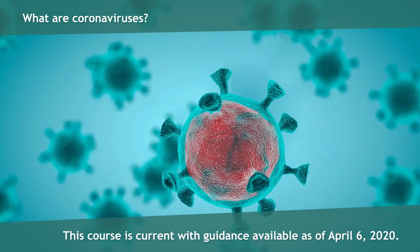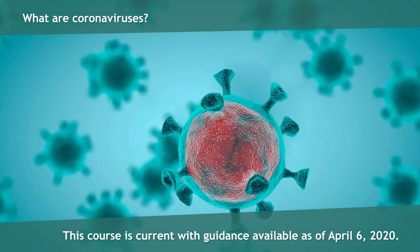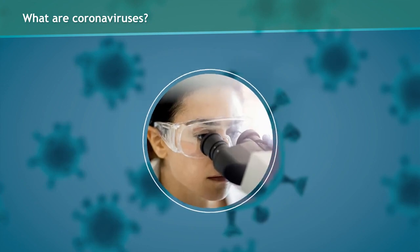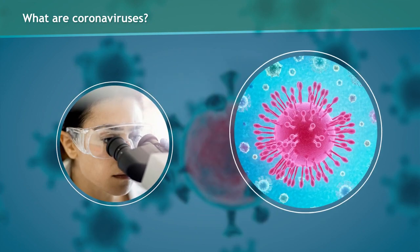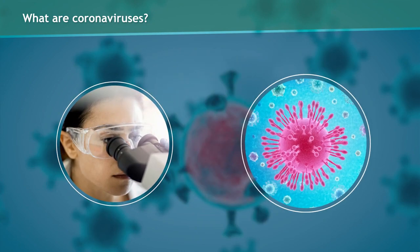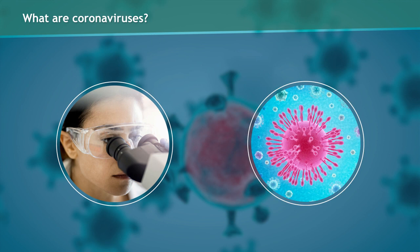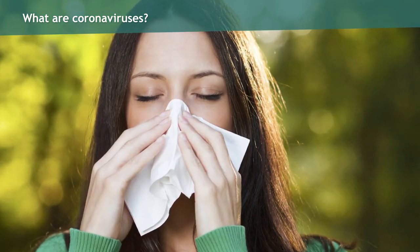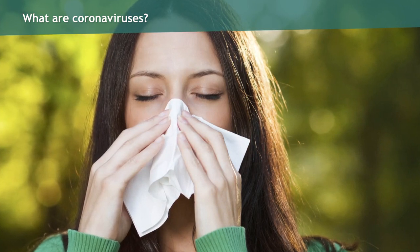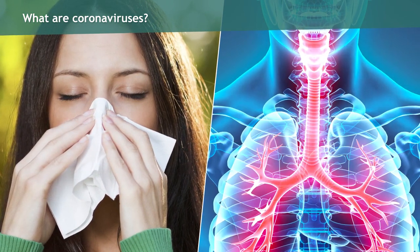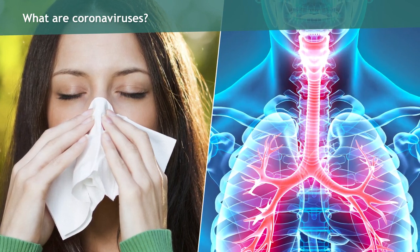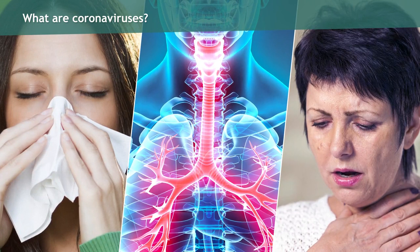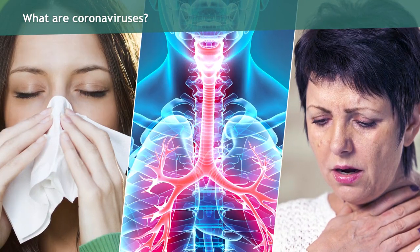Coronaviruses, a family of viruses that commonly occur in humans and animals, are named for the crown-like spikes on their surface that can be seen under a microscope. Of the seven known strains of the coronavirus, four are common human coronaviruses. Typically, these cause mild to moderate upper respiratory tract illnesses similar to the common cold and flu, and sometimes lower respiratory tract illnesses such as pneumonia or bronchitis. Most people will experience a type of common human coronavirus in their lifetime.